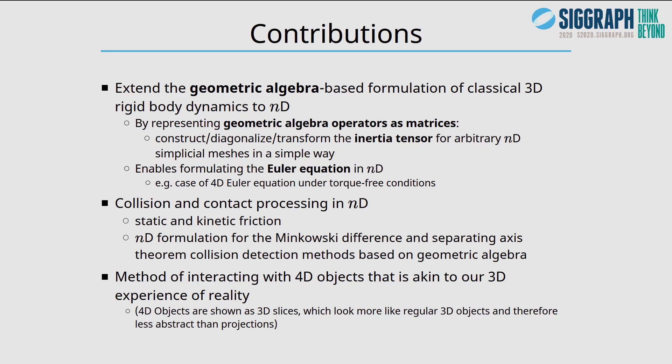The main contributions of this paper are to extend the geometric algebra-based formulation of classical 3D rigid body dynamics to n dimensions by representing geometric algebra operators as matrices. We can construct, diagonalize, and transform the inertia tensor for arbitrary n-dimensional meshes in a simple way, enabling formulating the Euler equations in n dimensions. Collision and contact processing are extended to n dimensions. I also present a method of interacting with 4D objects akin to our 3D experience.